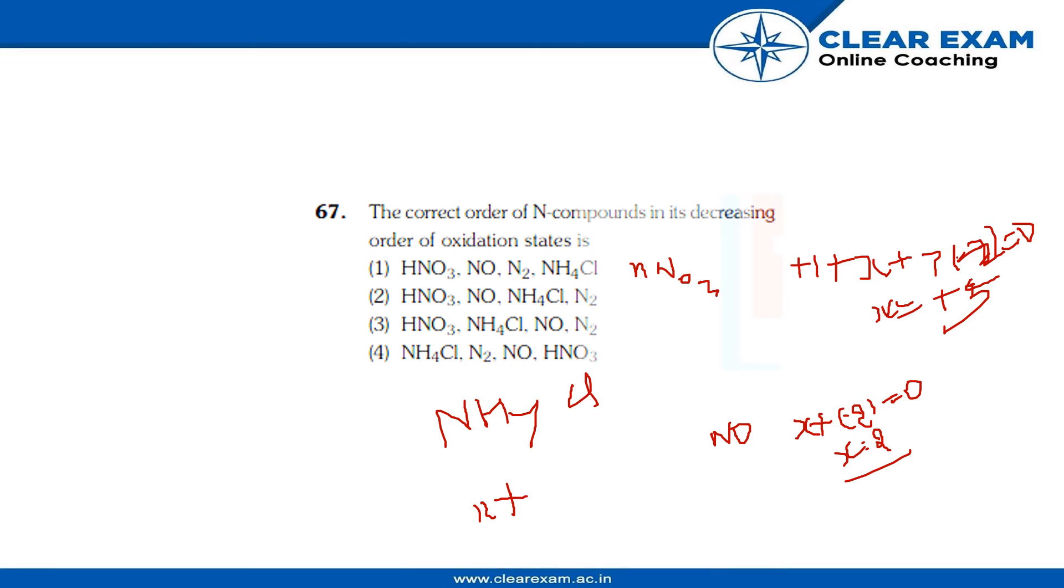H is +1, and we have 4 H atoms so multiply it with 4, and we know Cl is -1, so the value of X is -3 here.